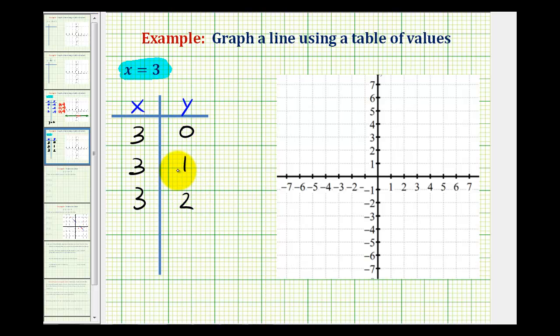But now that we have a completed t-table, this first row tells us that the point with an x coordinate of three and a y coordinate of zero must be a point on our line.